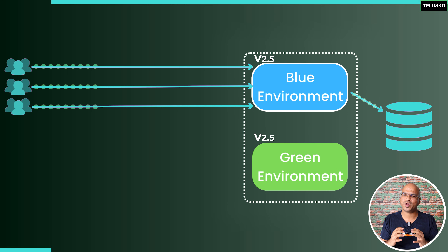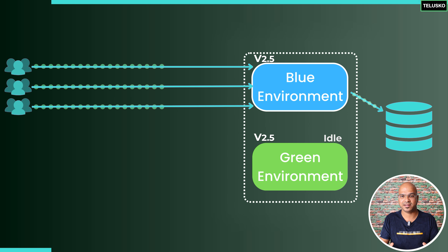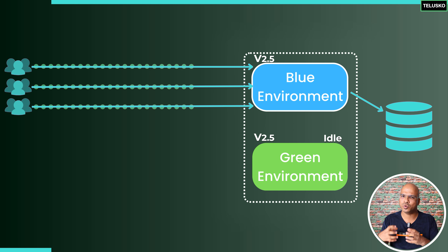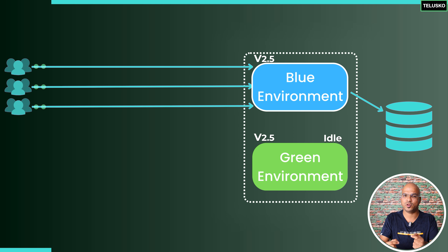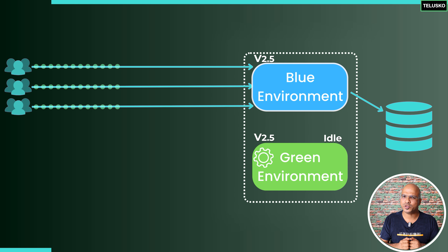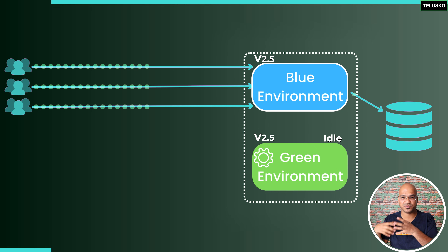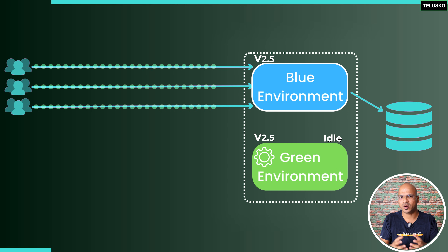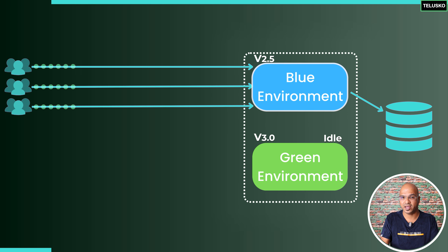In parallel you also have a green server, which sits idle doing nothing. When the DevOps or ops team wants to push an update from 2.5 to 3.0, they won't do it on the running blue server. Instead, they deploy the update to the green instance — the new package is tested there privately. Once the green instance is upgraded to 3.0 and ready to go live, the team proceeds to the switchover.